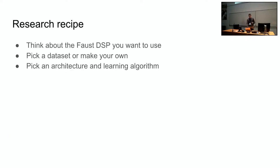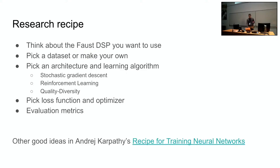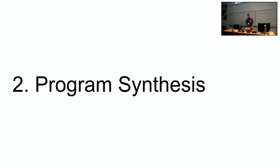So a general research recipe is to think about the Faust DSP you want to use, pick a data set or make your own, pick an architecture and a learning algorithm, such as stochastic gradient descent, or reinforcement learning and quality diversity. That's a reference to the notebook in the afternoon. You also want to pick a loss function and an optimizer, and evaluation metrics. And there are other good ideas in Andre Karpathy's recipe for training neural networks.